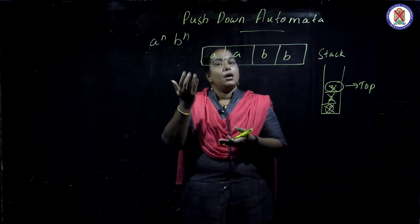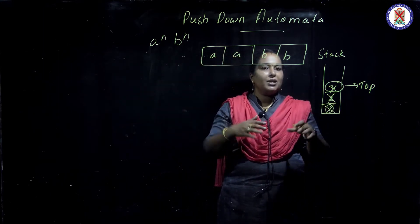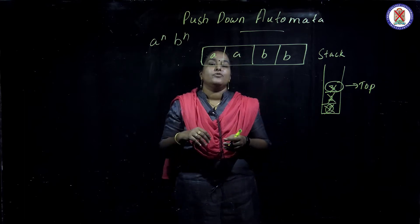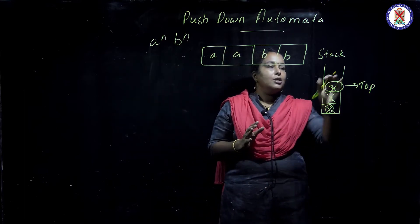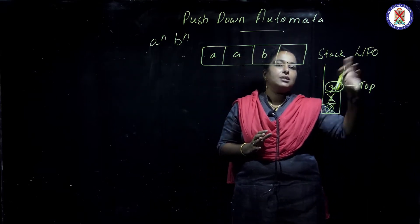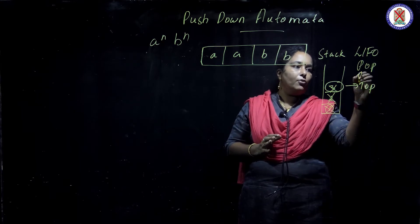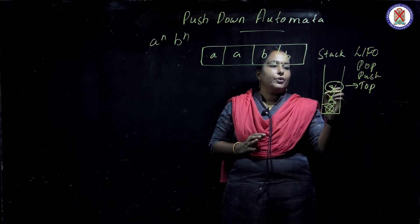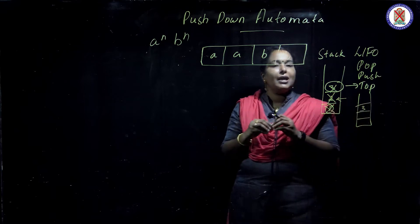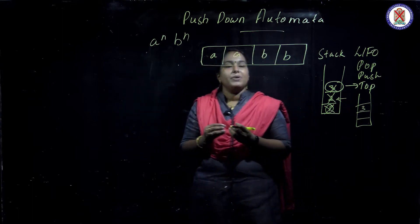Lower-level items are hidden from the user — only the top-level item is shown. This is a restricted memory. Just like stacking plates, you can only take from the top. Stack is a LIFO structure: last in, first out. Deletion is called pop and insertion is called push, and both operations happen only at the top.